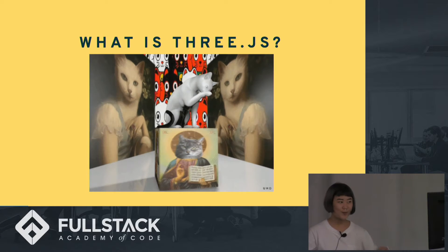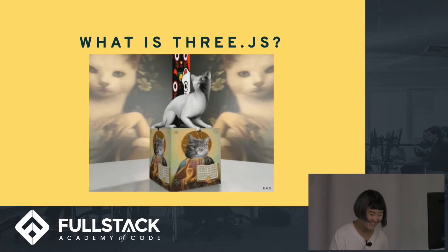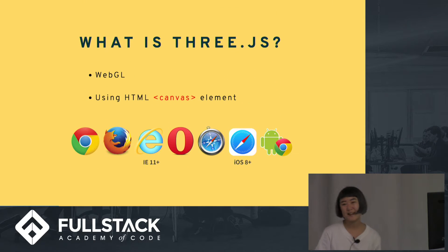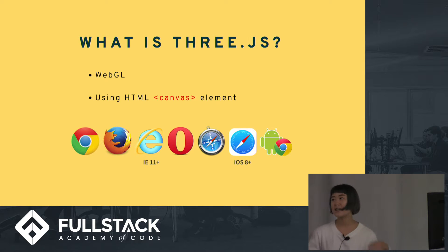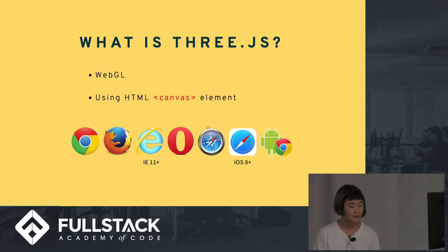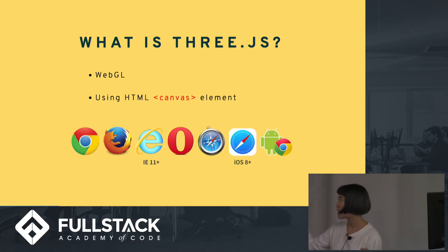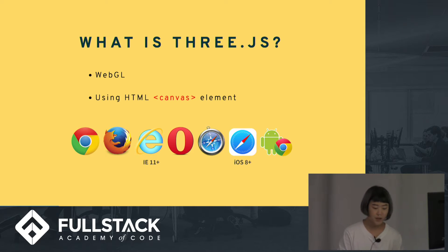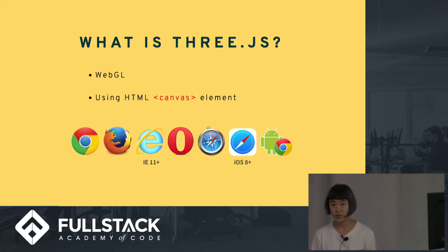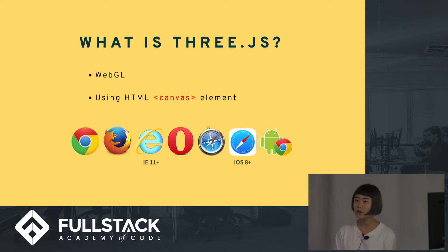So first of all, what exactly is Three.js? As previously mentioned in a Tech Talk, WebGL is a JavaScript API that allows you to render 3D and 2D graphics without the use of plugins. And Three.js is essentially an abstracted layer on top of WebGL that makes WebGL a lot easier to use. With Three.js, you also have your choice of renderer, so you don't actually have to use the WebGL renderer — you can also use the HTML canvas element, and you can also use SVG.